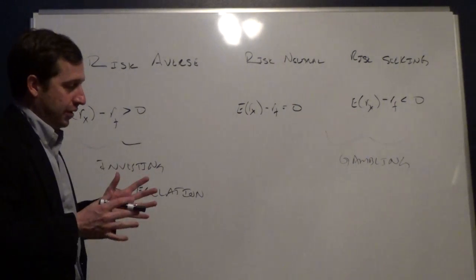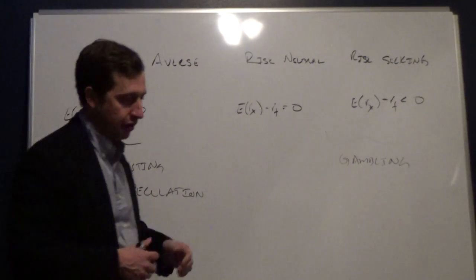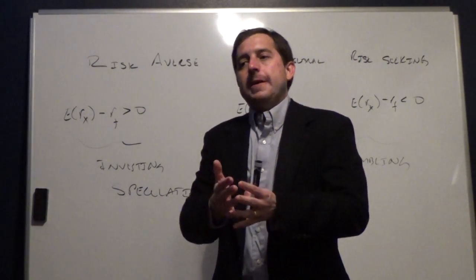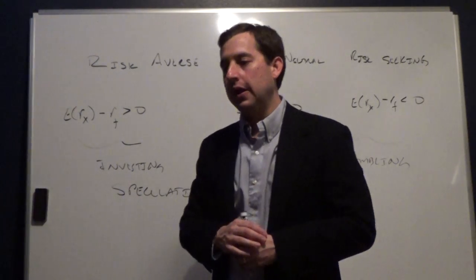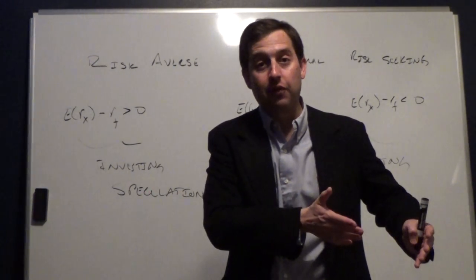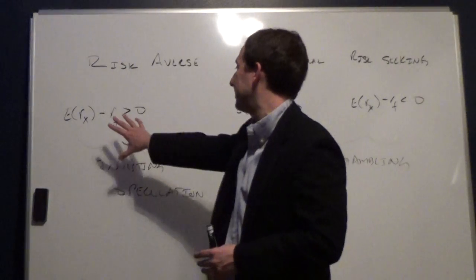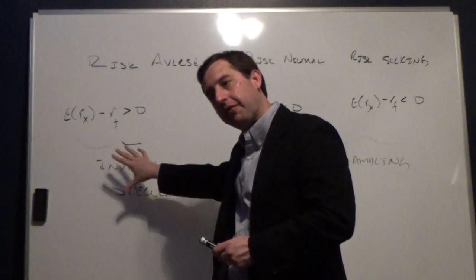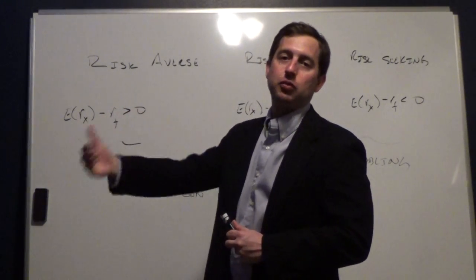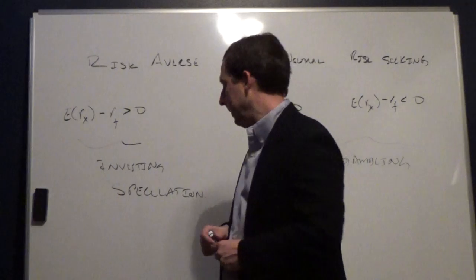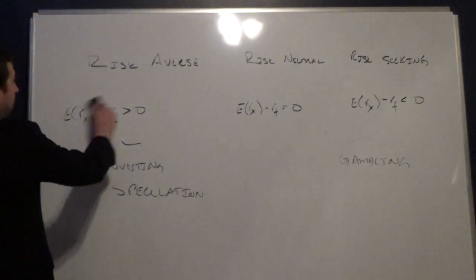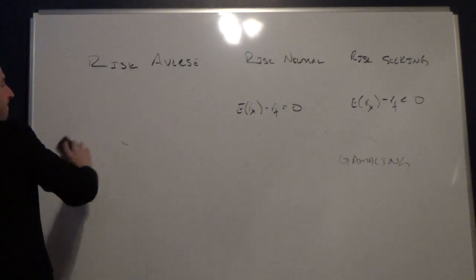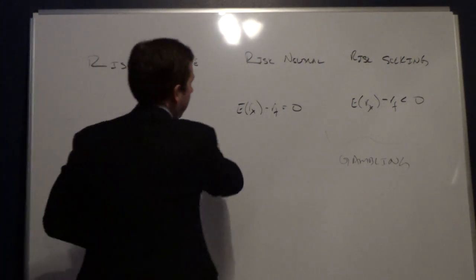The question is: a risk-averse investor will take on risk for an expected return, but we still don't know how much expected return they need for a particular level of risk. Assuming risk-averse investors, how does a risk-averse investor decide whether to buy a risky portfolio or not? The way we do this is by assigning utility.